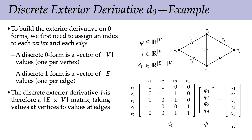The ordering of vertices and edges doesn't affect the correctness — a different enumeration gives a permutation of this matrix representing the same operation. This is one confusing thing about matrix representations: two matrices that look different can do the same thing. The matrix is not the discrete exterior derivative; it's just one of many representations of it.